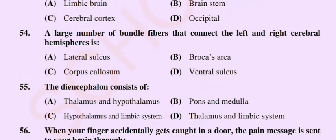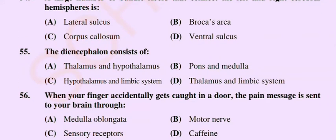Question number 55: The diencephalon consists of — option A: thalamus and hypothalamus, option B: pons and medulla, option C: hypothalamus and limbic system, option D: thalamus and limbic system. The correct option is option D: thalamus and limbic system.